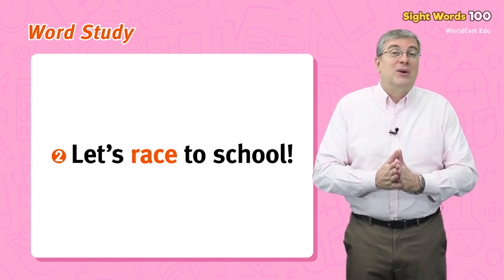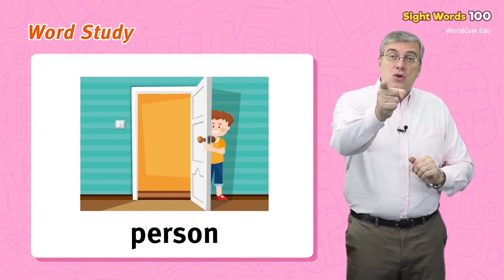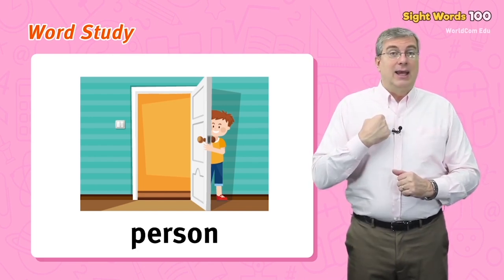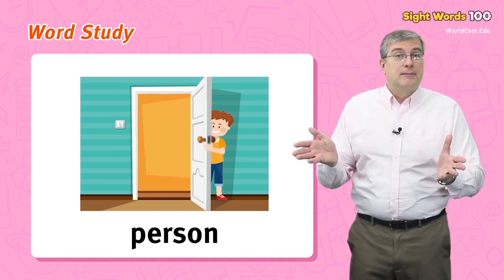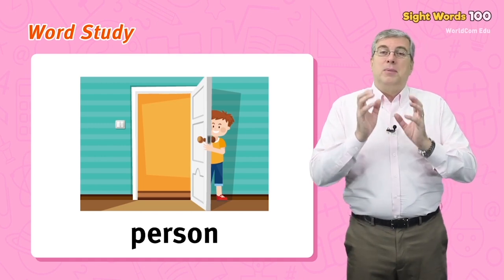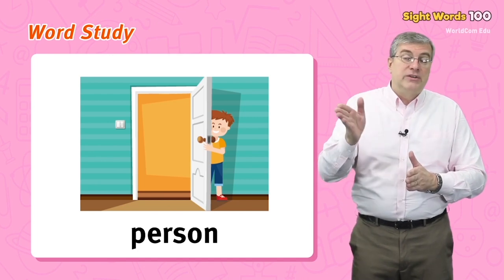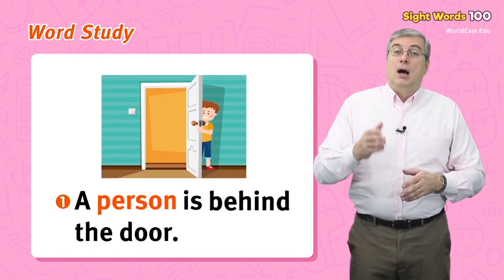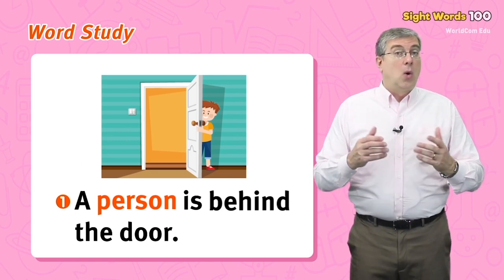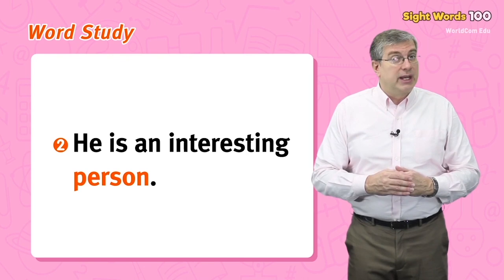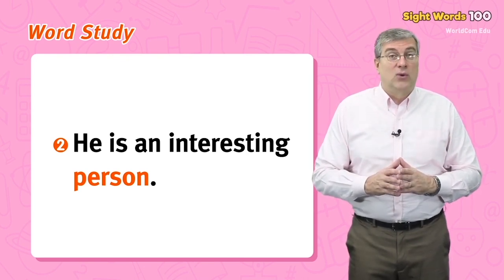Our last word is person. You are a person, I am a person, everyone around you is a person. When we talk about people but mean just one, we say person. For example, a person is behind the door, or he is an interesting person. Those are our words for today.